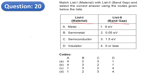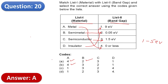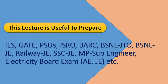Question 20: Regarding band gap classification of materials — for metals, band gap is zero; for insulators, band gap is high; for semiconductors, band gap is between 1 to 5 electron volts; and for semimetals, it lies between metals and semiconductors. The correct answer is A. That concludes all questions — thank you.